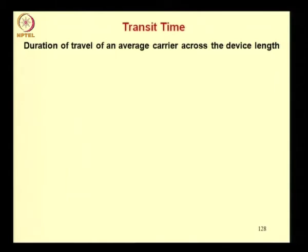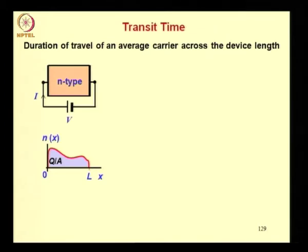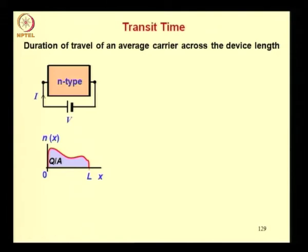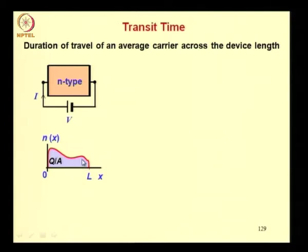Let us look at transit time. This time is the duration of travel of an average carrier across the device length. The situation which introduces this time is shown here: you have an n-type semiconductor across which a voltage is applied and a current is set up. The doping need not be uniform, as shown by the fact that the electron concentration varies arbitrarily with x. The length of the device is l. We shall denote the area under this electron concentration distribution as charge Q divided by small q into A — charge per unit area, since integrating n(x) over x gives per unit area.